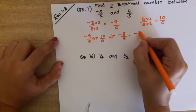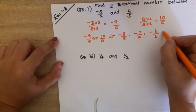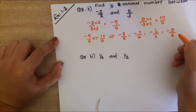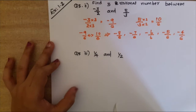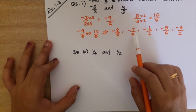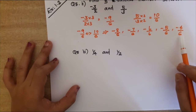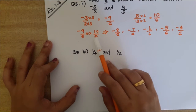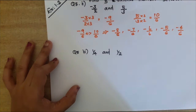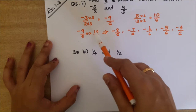The five rational numbers between -9/6 and 10/6 are: -8/6, -7/6, -6/6 (that is -1), -5/6, and -4/6. We can also write other numbers like -3/6, -2/6, 1/6, 2/6, up to 10/6.